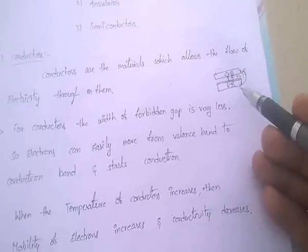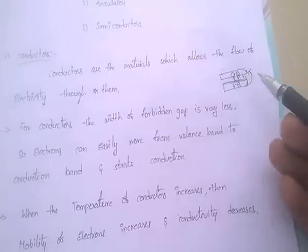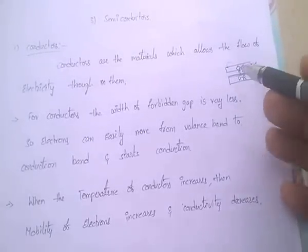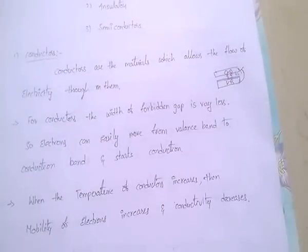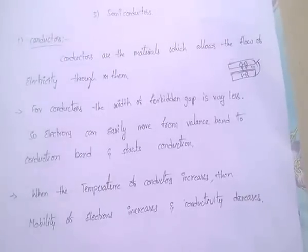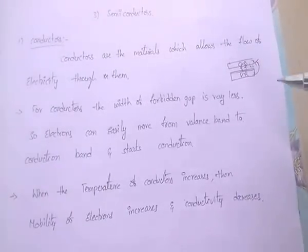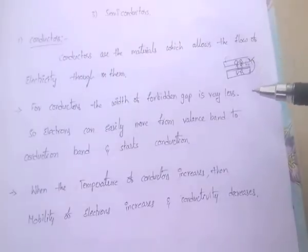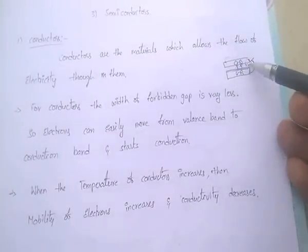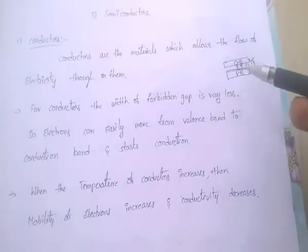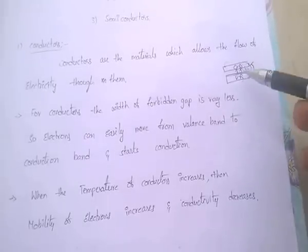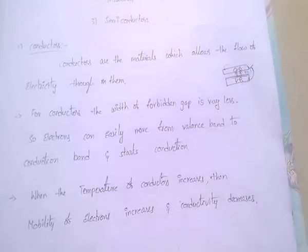The electrons can easily move from the valence band to the conduction band and start conduction. Whenever the temperature of a conductor increases, the mobility of electrons increases, but conductivity decreases. The forbidden gap is very, very less for conductors.